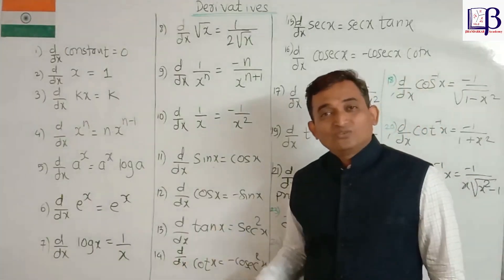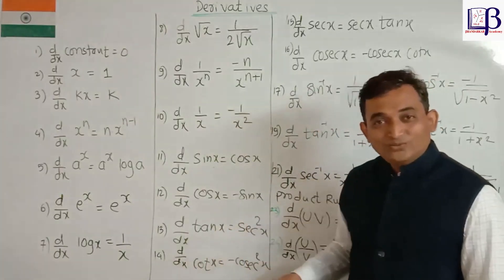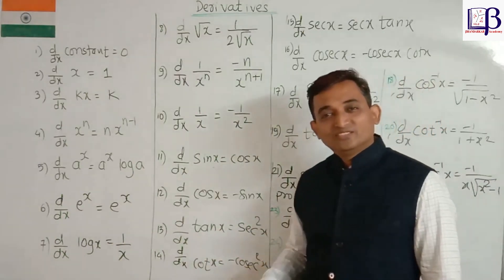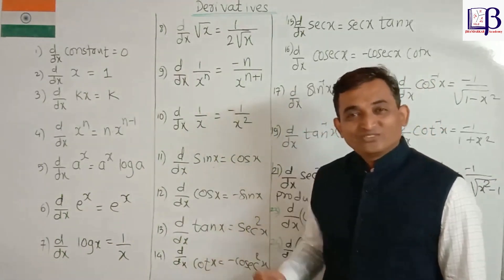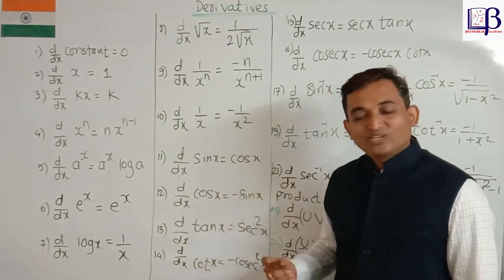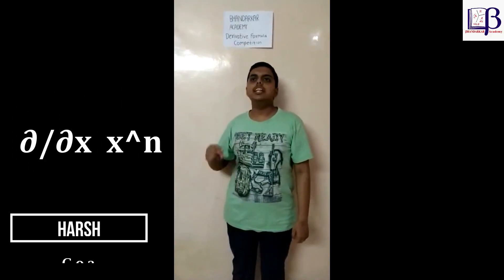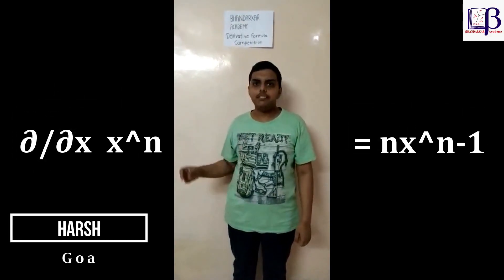d by dx of a constant is equal to 0. d by dx of x is equal to 1. d by dx of kx is equal to k. d by dx of x raise to n is equal to n dot x raise to n minus 1.